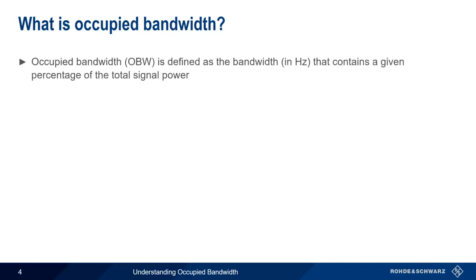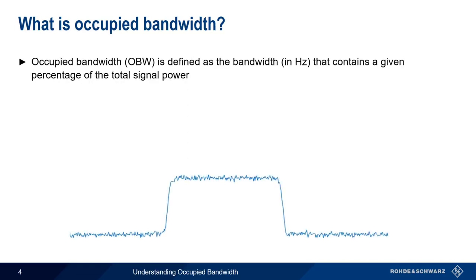We define occupied bandwidth as the frequency span, or bandwidth, in units of hertz, that contains a given percentage of the total signal power. This is perhaps best understood graphically. Occupied bandwidth is measured by computing the upper and lower bounds that contain a certain percentage of total power. In this example, 99% of the total power in the span is contained between the two vertical dotted lines, so the frequency range between these lines is the 99% occupied bandwidth.